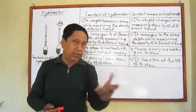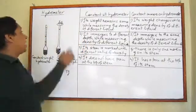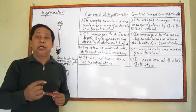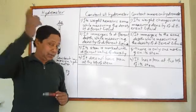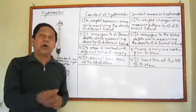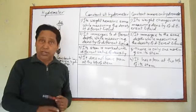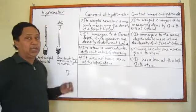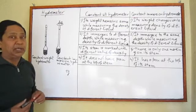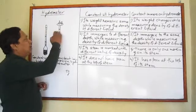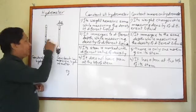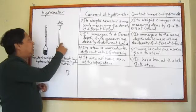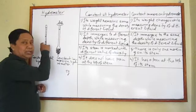We immerse the constant immersion hydrometer up to the marking in the given liquid. Using the values of the standard masses needed to immerse it to the marking in pure water and in the given liquid, we then calculate the density of the given liquid. This method is a little more difficult compared to the constant weight hydrometer.